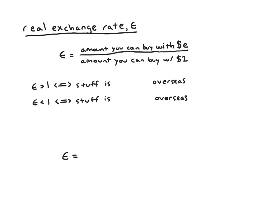Given that equation, a natural way to interpret it is if epsilon is bigger than one, then it means the amount you can buy overseas is bigger than the amount you can buy in the US, which means that stuff overseas must be cheap. So if epsilon is bigger than one, stuff is cheap overseas. You'll want to travel overseas for vacation and import things from overseas because they're cheap.